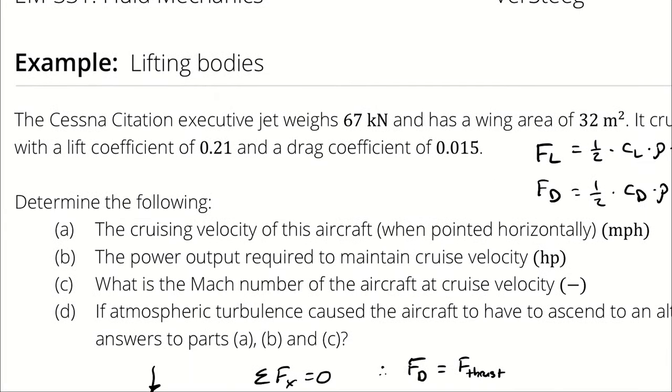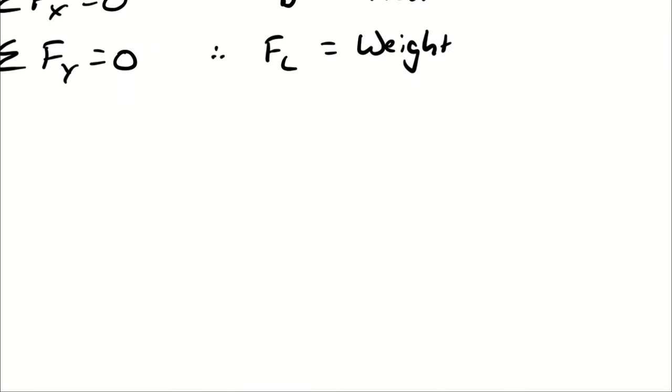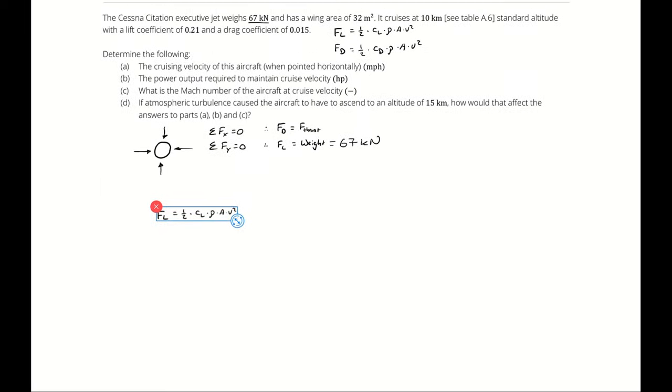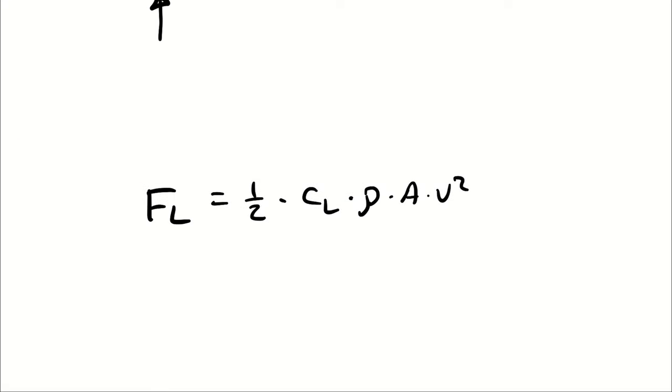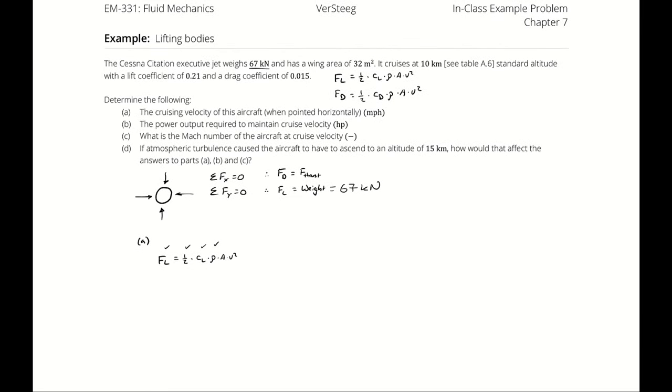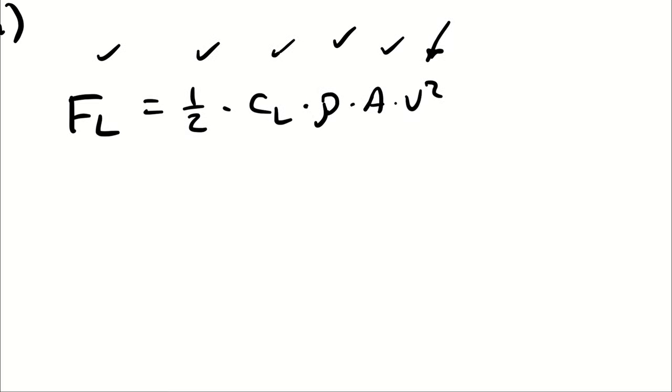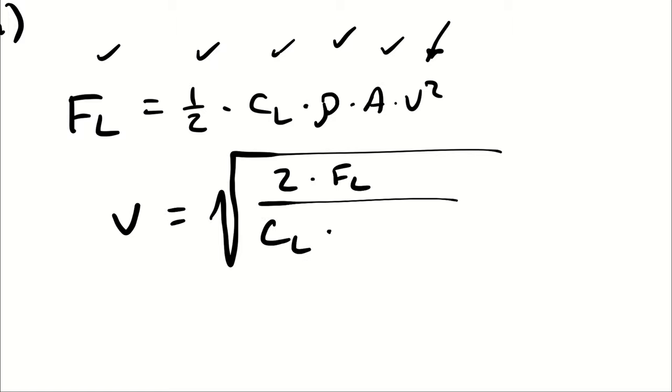The fact that I know the executive jet weighs 67 kilonewtons means the force of lift is also 67 kilonewtons. In this equation, I know the force of lift because I know the weight. I know one-half, I was given the coefficient of lift, I can look up the density at this altitude. The area is given as 32 square meters. I can solve for velocity. The velocity is the square root of 2 times the force of lift divided by the coefficient of lift times density times area.